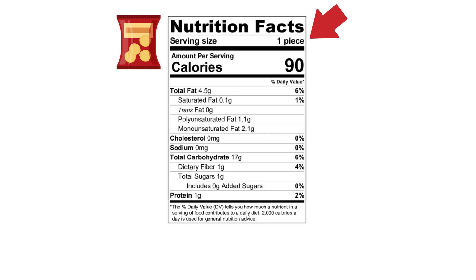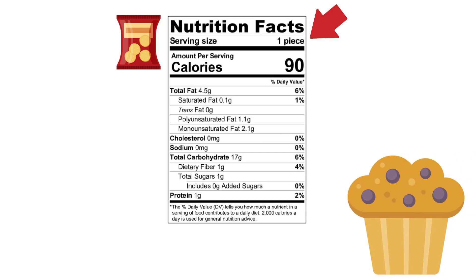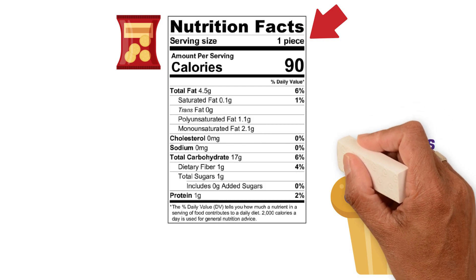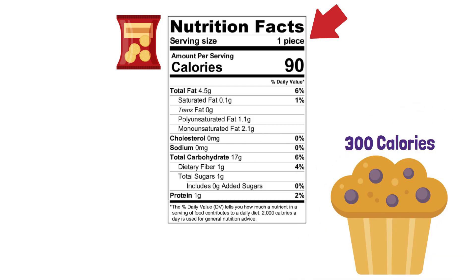It's also important to note that if you're eating more than the manufacturer is recommending as a serving size, you need to multiply the nutrition information by the amount you're eating. For instance, if the nutrition label says each serving is 150 calories, we need to make sure that one serving size is for the whole muffin rather than half, or else we would actually be consuming 300 calories.